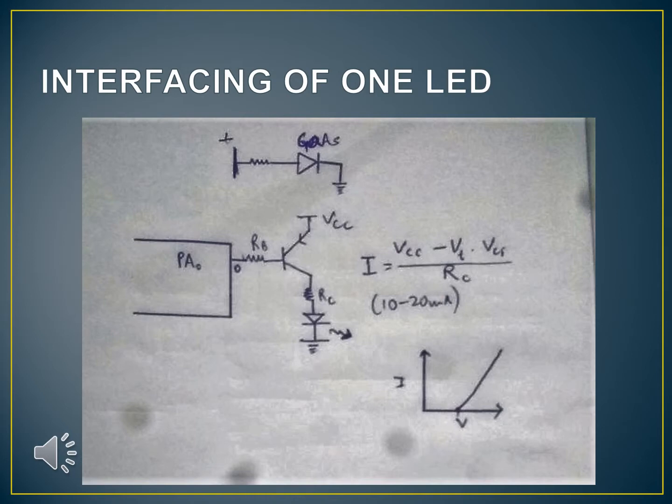So now let's see how interfacing of one LED is done. We have been provided with an output port PA0 and we have been given a transistor to drive the current. For LEDs a certain amount of current is necessary for a diode. Here RC sets the current limit in diode. This is how we interface LEDs through port lines. So take for example PA0 gives signal 0, then this LED will glow. So we have got the required equation. I is equal to Vcc minus Vt by RC. This current generally ranges from 10 to 20 mA. And this is the IV characteristics of a diode.